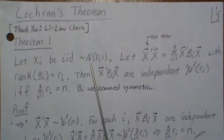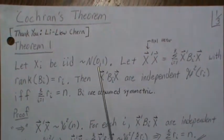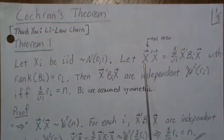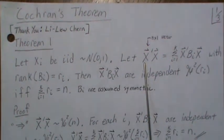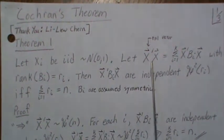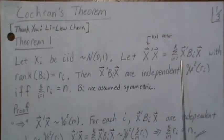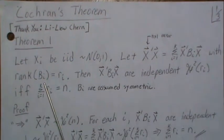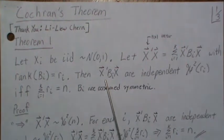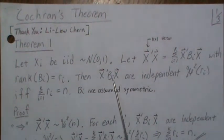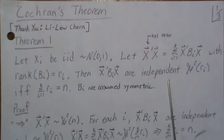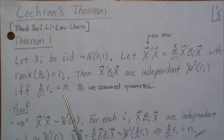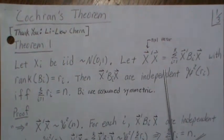Let Xi be i.i.d. Normal(0,1) random variables — standard normal — and let Xi be an n-by-1 vector, so Xi is a multivariate normal with mean 0 and covariance matrix I, the identity matrix. And X'X equals the sum of X'BiX from 1 to K, with the rank of the Bi matrices Ri. Then all the quadratic forms are independent and chi-squared with degrees of freedom Ri if and only if the sum of the ranks is n, where we assume the Bi's are symmetric.